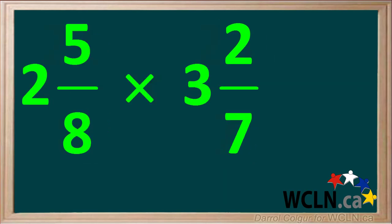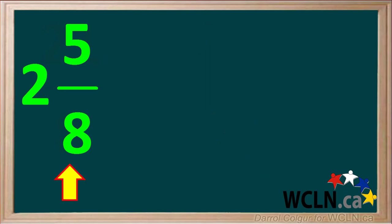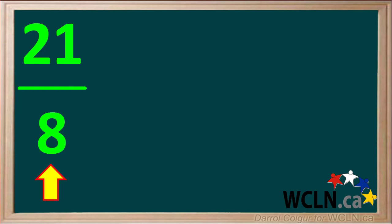Let's do an example. We're asked to multiply 2 and 5 eighths by 3 and 2 sevenths. We start by changing 2 and 5 eighths to an improper fraction. 2 times 8 equals 16 plus 5 equals 21. So the first improper fraction is 21 eighths.